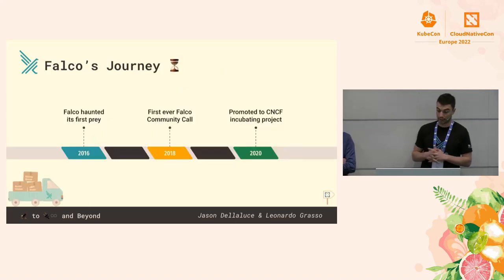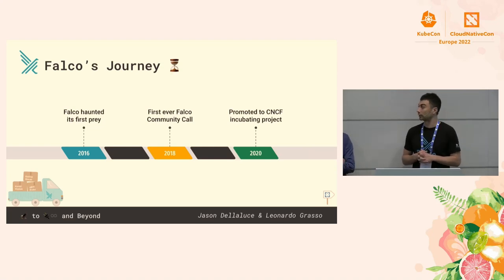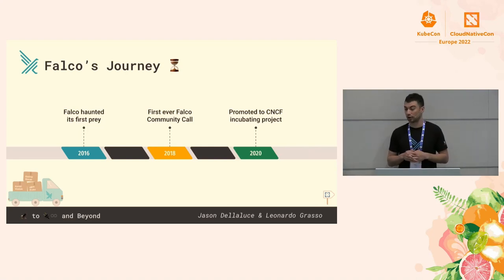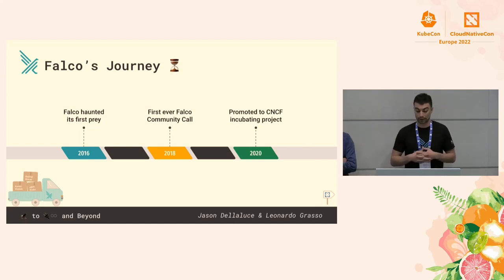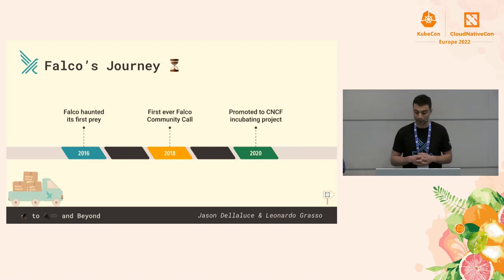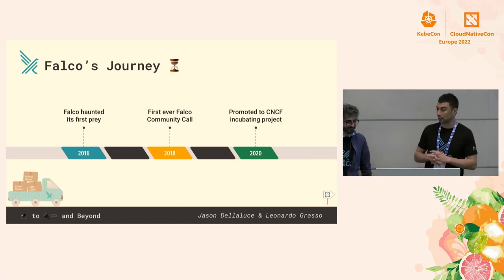Now let's give a quick look at Falco's history. In 2016, Sysdig started developing Falco as an open source project, trying to fill some of the gaps in the cloud security industry. Falco was then donated to the CNCF as a sandbox level project, looking to create a community around it and make the governance truly open. Two years ago, Falco was promoted in the CNCF to an Incubating level project, and the community of Falco lovers started to grow even further.